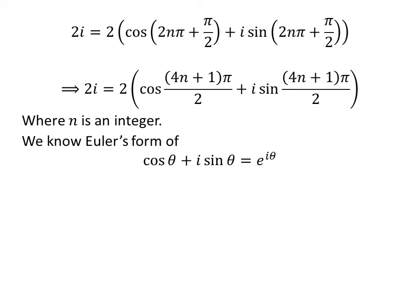We know Euler's form of cosine of theta plus iota times sine of theta is exponential of iota times theta. And 2 can be written as exponential of natural log of 2. Taking into account these two statements, we can rewrite 2 times iota as exponential of natural log of 2 times exponential of iota times (4n plus 1) times pi upon 2.